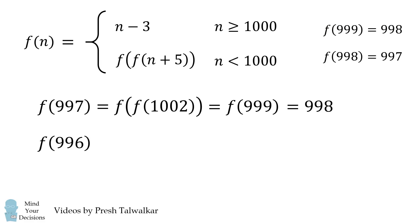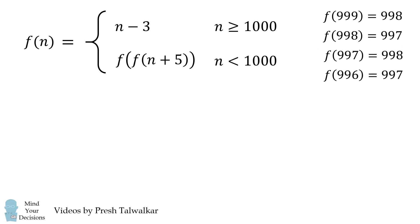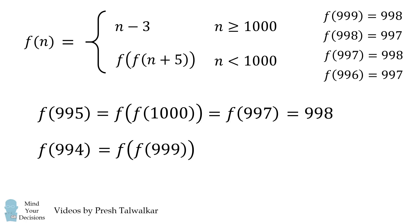We can do a similar calculation for f of 996. We get to f of 998, and this is equal to 997. Let's calculate a few more. What's f of 995? We work through the definition, and we get to f of 997, which is equal to 998. f of 994 will be equal to f of 998, and that's equal to 997.